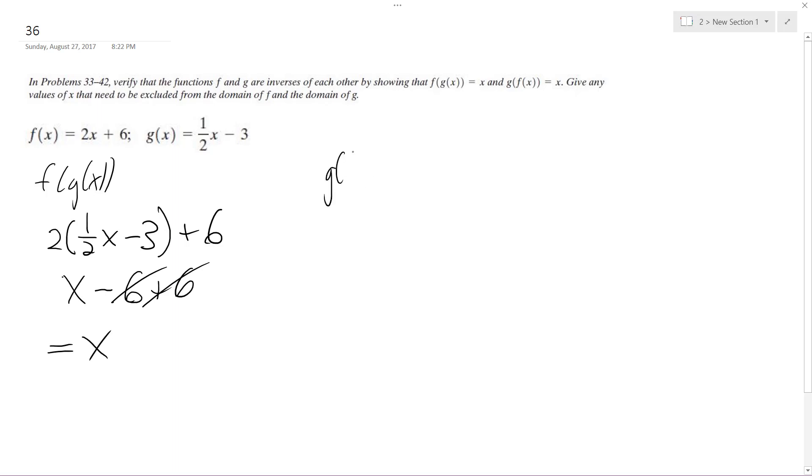Now if g of f of x equals x, then these are the inverses of each other. Alright, so we get 1 half 2x plus 6 minus 3.